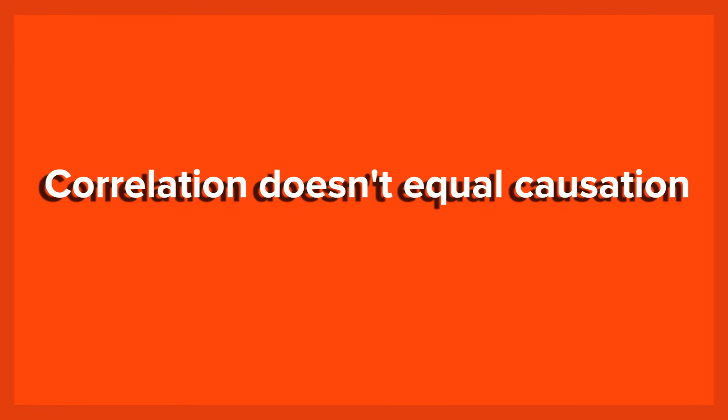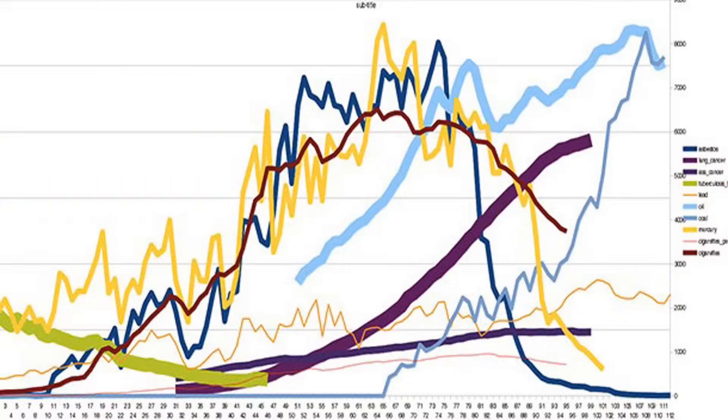Number 22. Correlation Doesn't Equal Causation. This doesn't mean that you should ignore correlation, though. The more evidence for something there is, the more you should consider the causation.